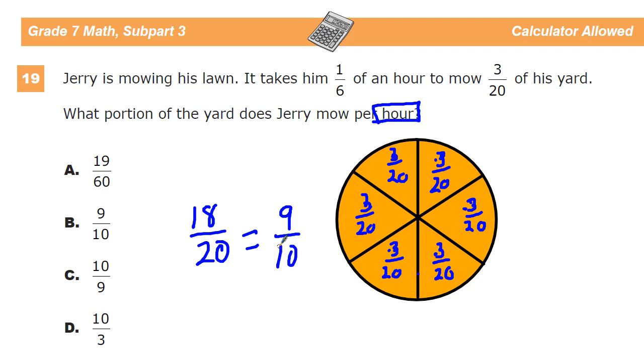Another thing you could think about is, okay, so it's one-sixth of an hour, so there's six of those groups. This is a calculator-allowed section,